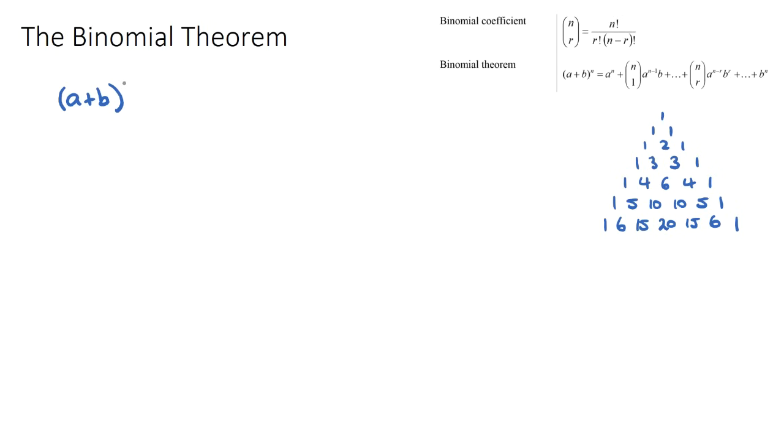If we had A plus B to the power of two, this is the bracket A plus B multiplied by A plus B. You probably would have learned some sort of expanding technique where you multiply the first and the outside and the inside and the last terms, and we'd get A squared plus 2AB plus B squared. So this is a binomial expansion where the power was two.